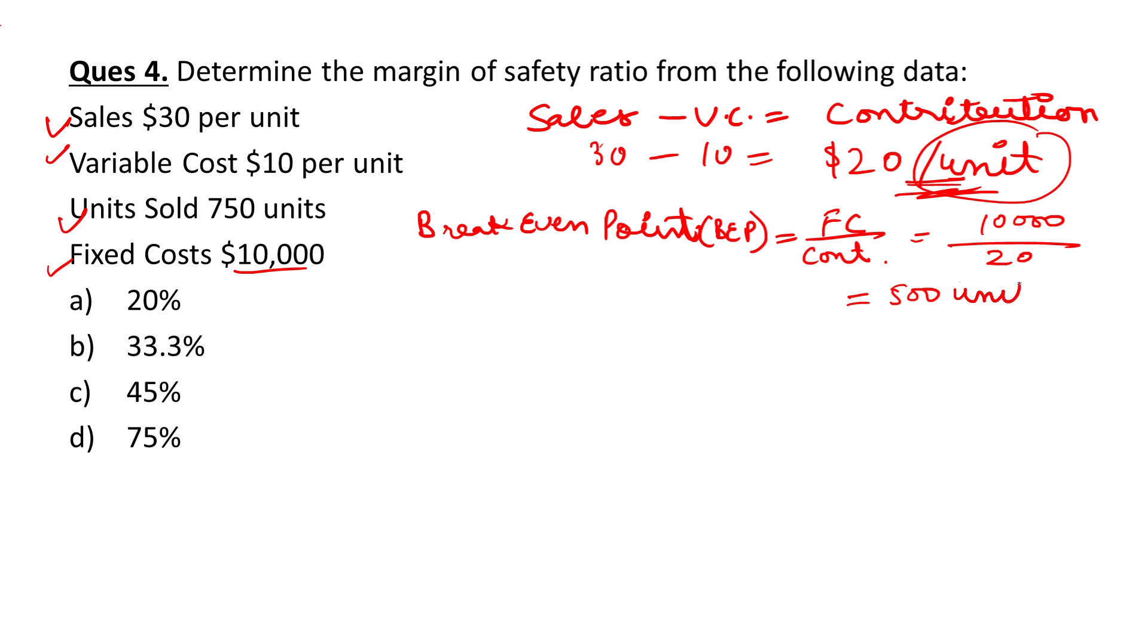Because the contribution is calculated in terms of units, the break-even point is 500 units. We can easily convert it into amount: the sale value is $30, so $15,000 is the break-even point in terms of amount.